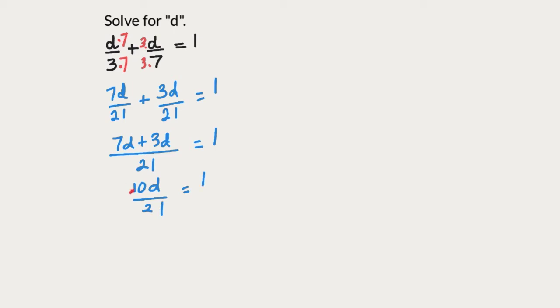10 is being multiplied here in the numerator and 21 is dividing this quantity. When we take these two numbers to the other side, 21 will be multiplying 1 and 10 will be dividing the quantity that is present on the right hand side. So we can rewrite this as d equals 21 over 10 which equals 2.1.